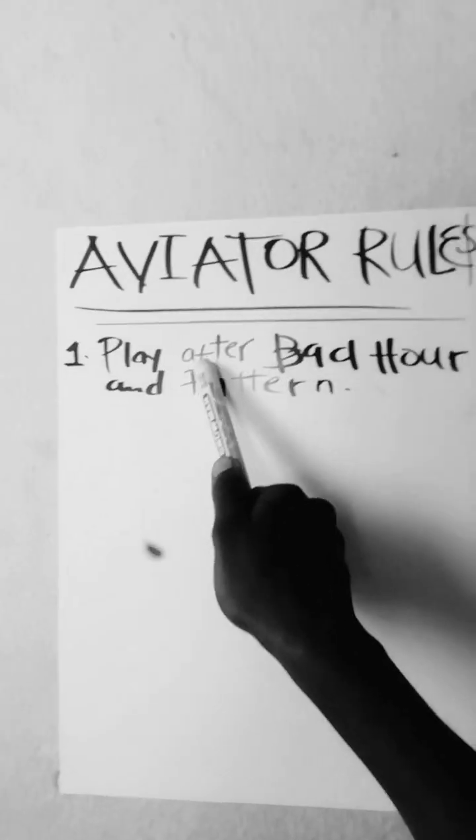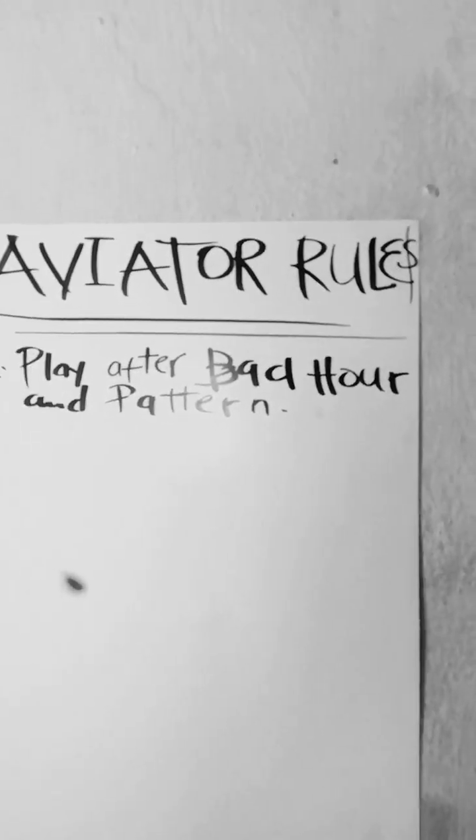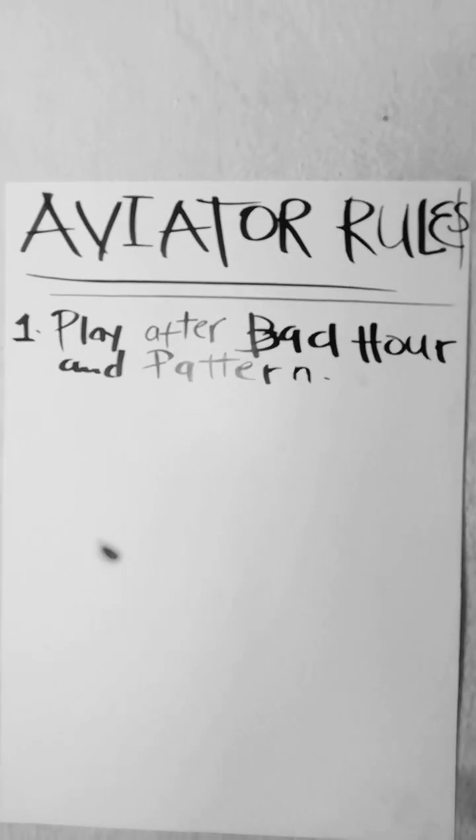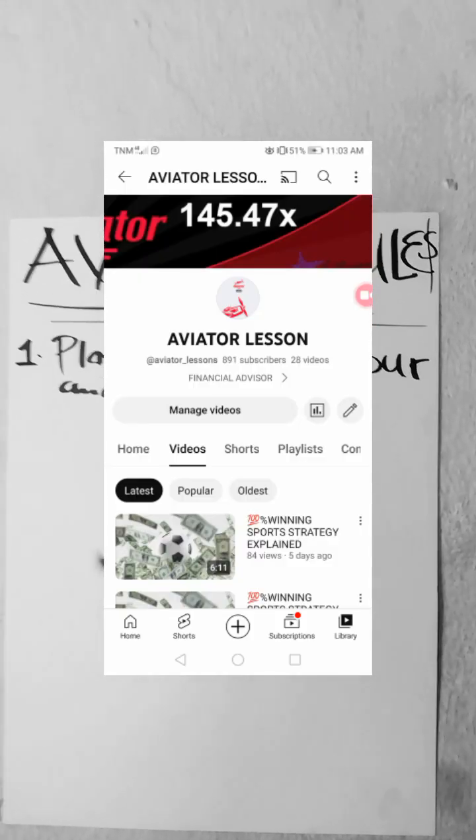It says play after bad hour and pattern. For people who don't understand what bad hour and pattern mean, you can simply go on YouTube and watch my video on Aviator language where we explain all these terms.